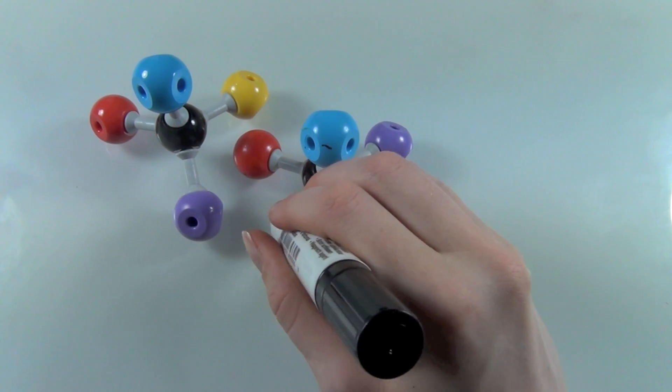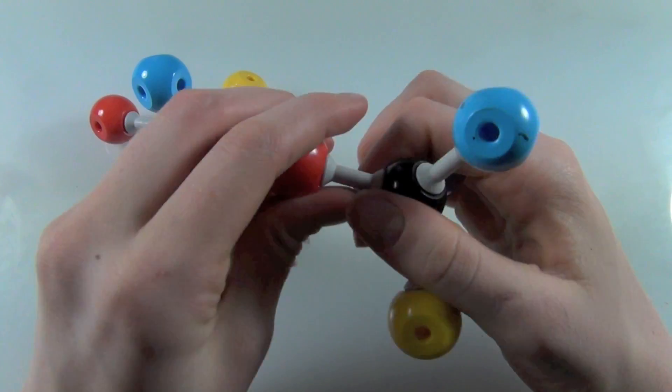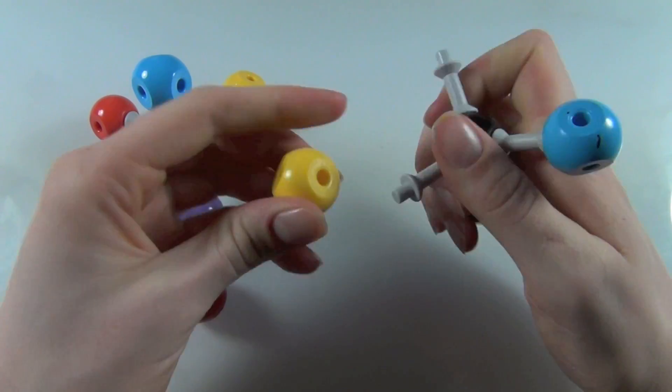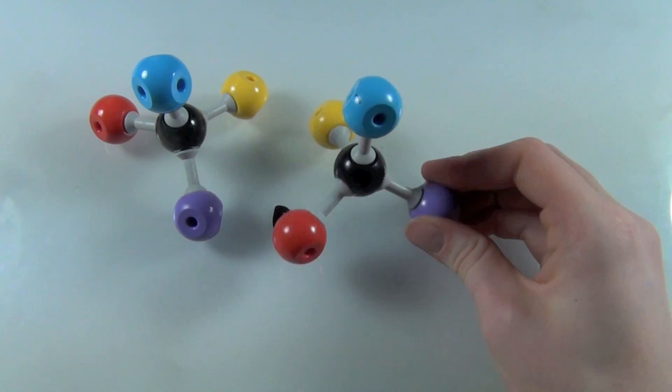So therefore, if I switch any two groups again, in this case yellow and red, I'm going to end up with the molecule I started with, i.e. the two molecules are going to be identical again.